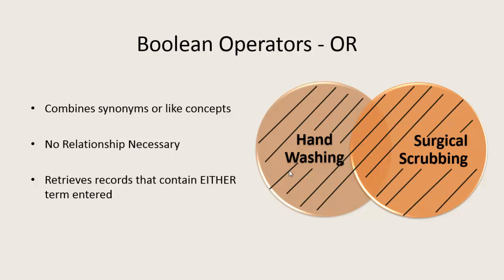When you OR things together, such as hand washing OR surgical scrubbing into a database, the database is going to look for any article that discusses hand washing OR surgical scrubbing, but there doesn't necessarily have to be a relationship between them. So it's one way that you can go about casting a broad net in order to find articles that describe your concept.